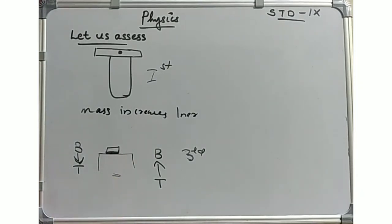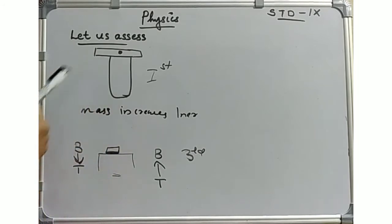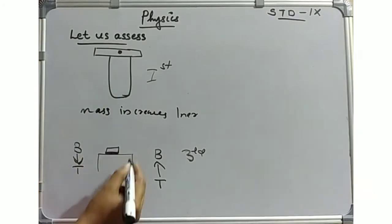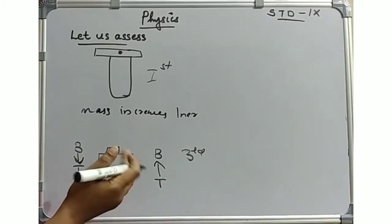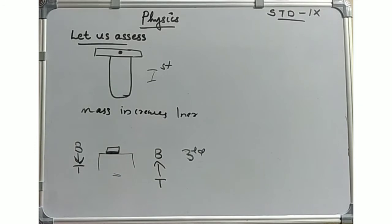We have two balanced forces. The force of the table is equal and opposite to the force of the book. To remove the dust from a carpet, it is suspended and hit with a stick.